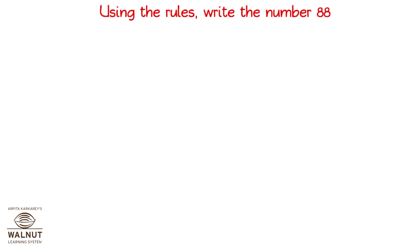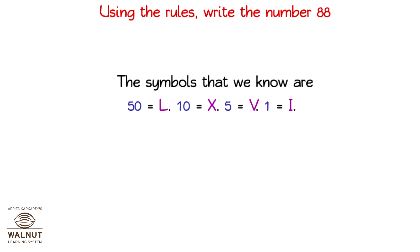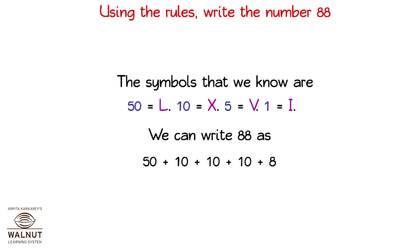Using the rules, write the number 88. The symbols that we know are: 50 is L, 10 is X, 5 is V and 1 is I. We can write 88 as 50 plus 10 plus 10 plus 10 plus 8. That gives us L, X, X, X and V followed by 3 I's. That is our answer.